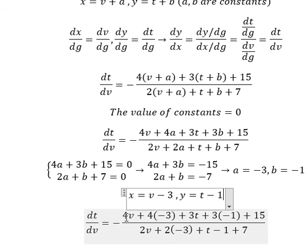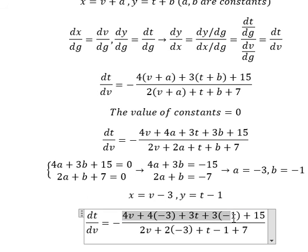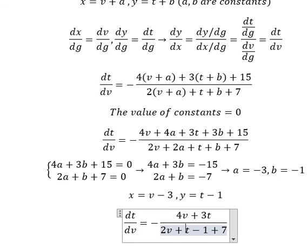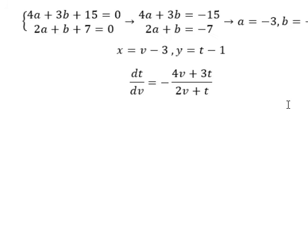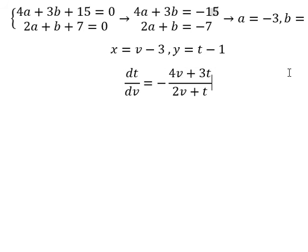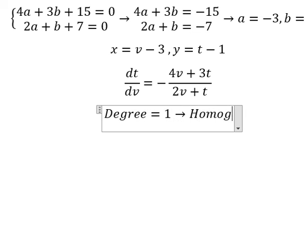We change A to negative 3 and B to negative 1. If we simplify the numerator, we just have 4V plus 3T. And the denominator simplifies similarly. Now they are homogeneous because we have V, T, V, T — all of degree 1. So this is a homogeneous equation.